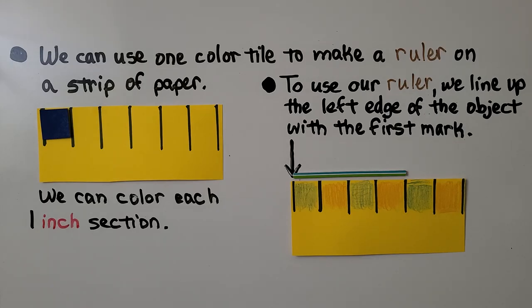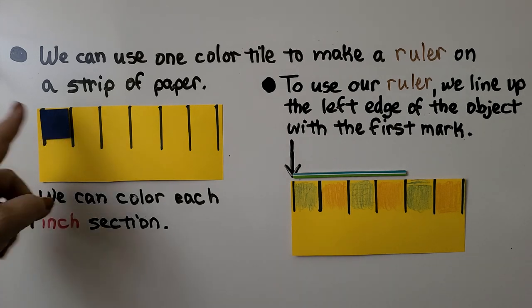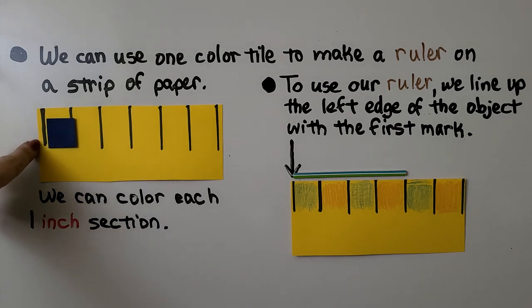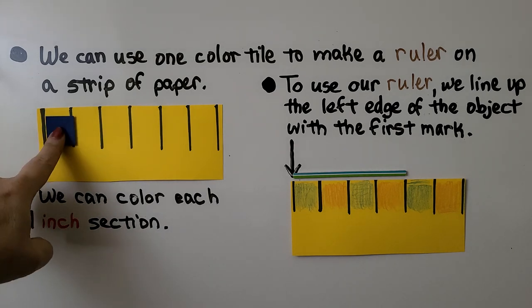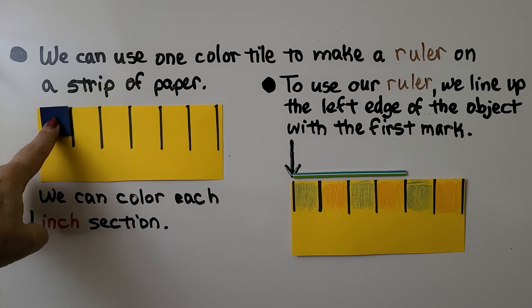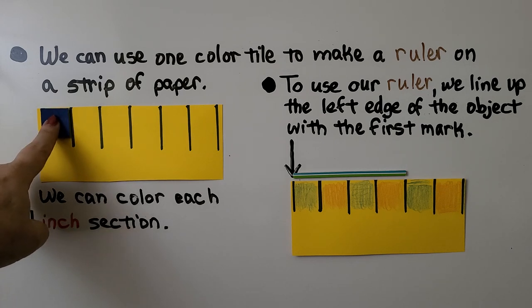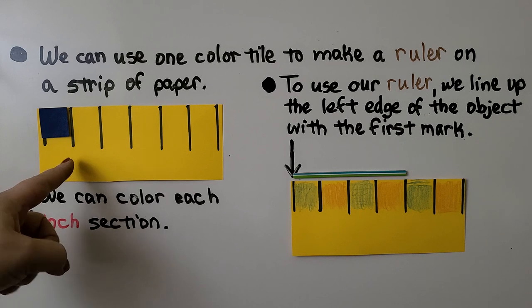We can use one color tile to make a ruler on a strip of paper. What we do is we take our color tile and we draw a line right here, a straight line, and we put our color tile right up next to it, not on the very edge of the paper, but a little bit in because we want to make sure our line is straight, and then we draw a line on the other side of the color tile.